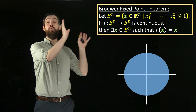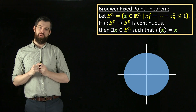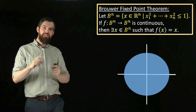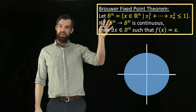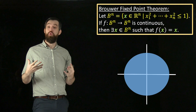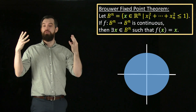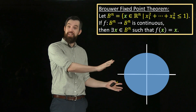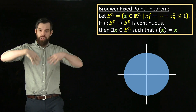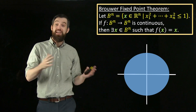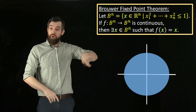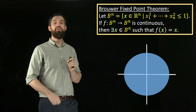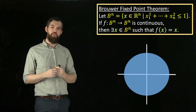This is the formal statement of Brouwer's fixed-point theorem. I have to tell you a few pieces of terminology first. B^n is the mathematical way we're going to describe a closed ball of dimension n. So for example, this is B^2 — the closed ball of dimension 2 — and it basically just looks like a disc, a circle, but filled in: all of the points where the sum of the squares of the coordinates is less than or equal to one.